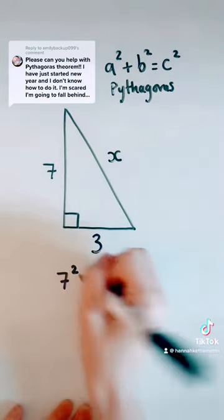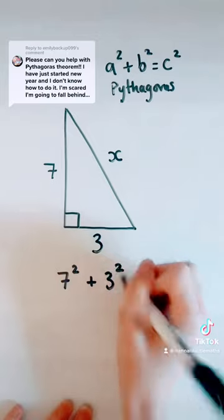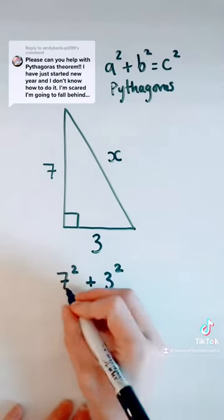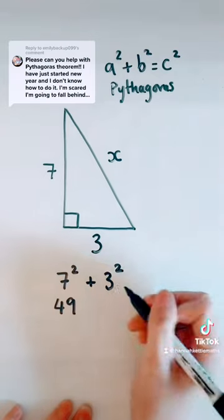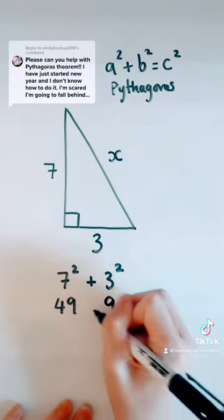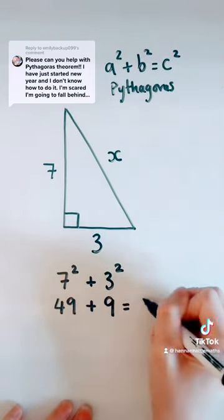We're going to do 7 squared add 3 squared. 7 squared means 7 times 7, so that's 49. 3 squared means 3 times 3, so that's 9, and 49 add 9 is 58.